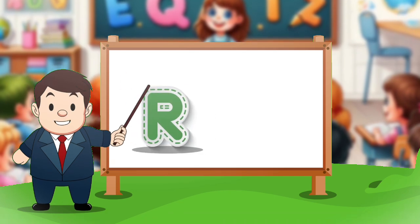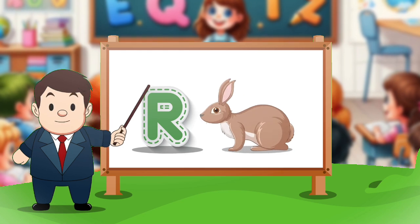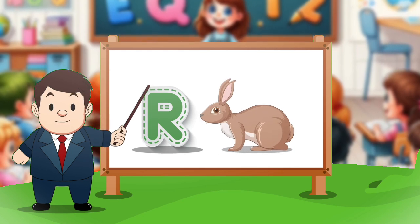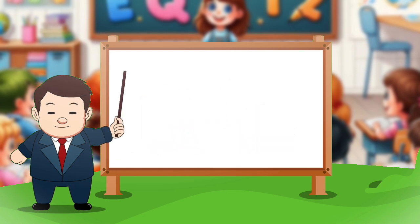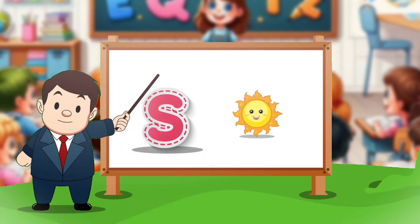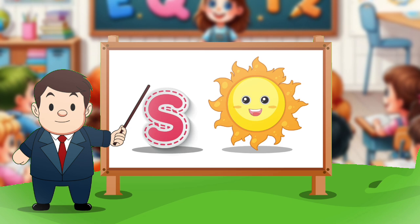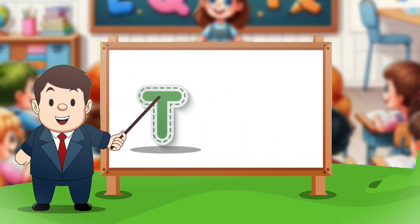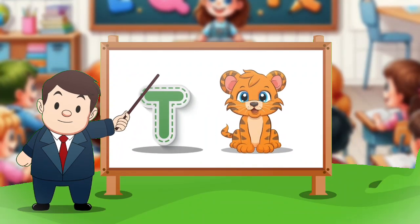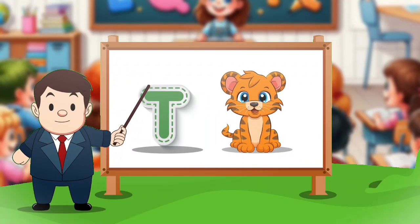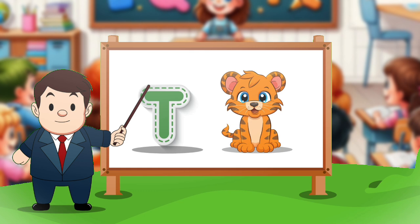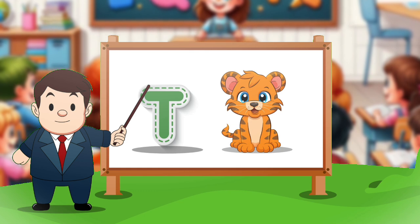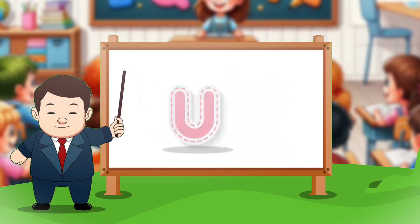R. R for rabbit. S. S for sun. T. T for tiger.